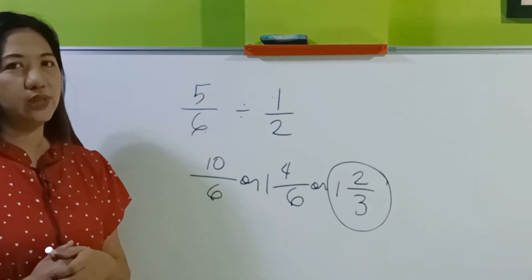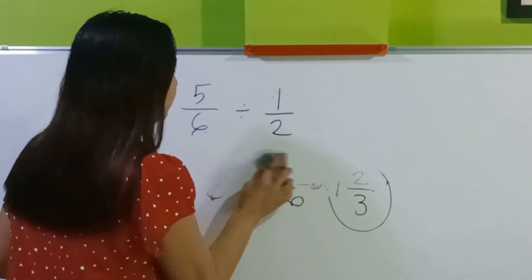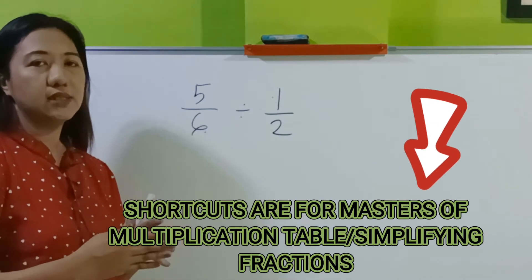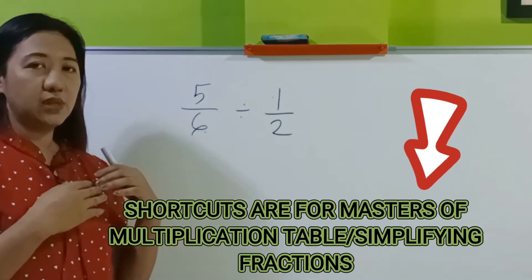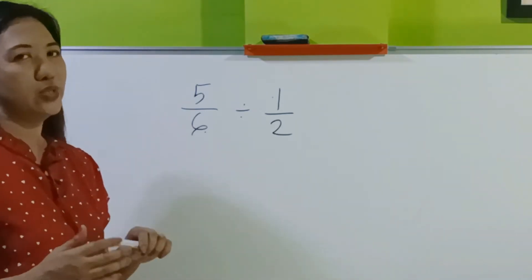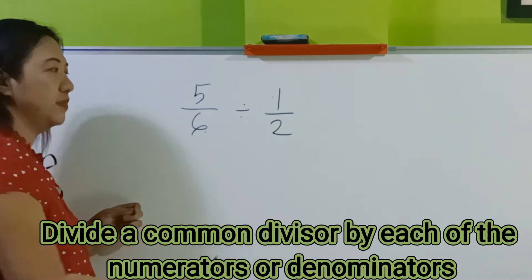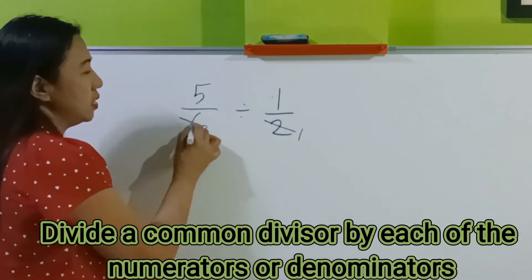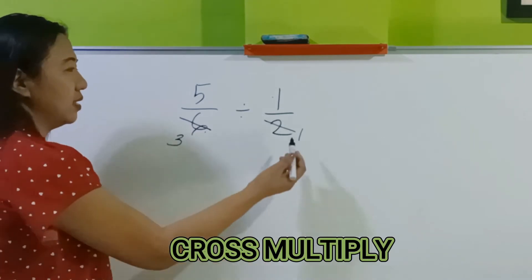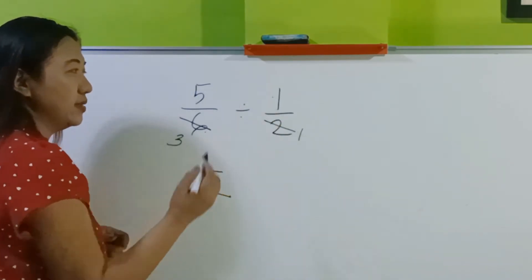So this is the shortcut, and there's also a shorter cut of shortcut. The shortcut is for those who are already expert in multiplication and reducing of fractions. But if you're still starting, please try the long cut. For the shorter cut of shortcut: what can you divide 2 and 6 by? Cancel — 2 divided by 2 is 1, 6 divided by 2 is 3.